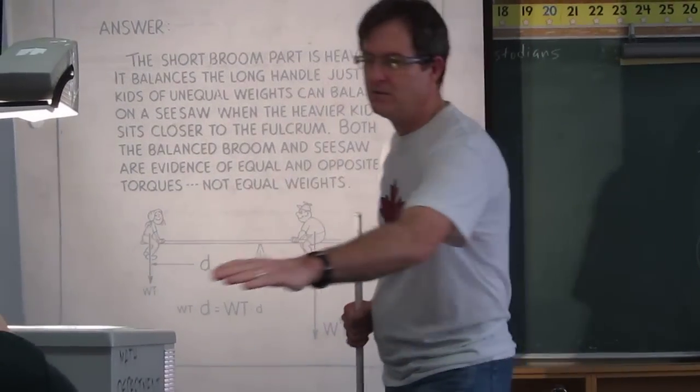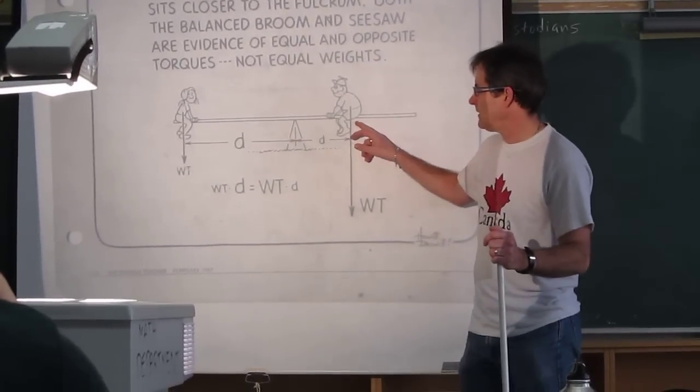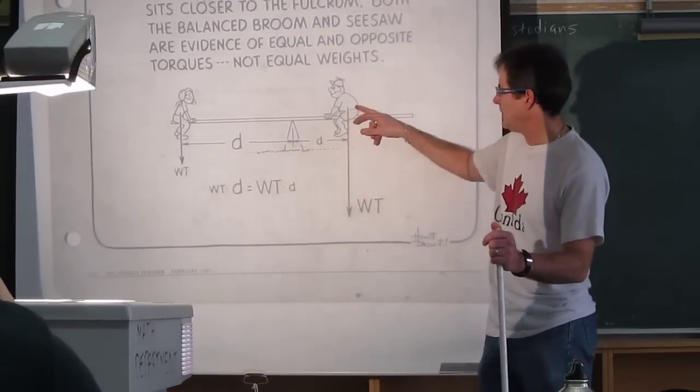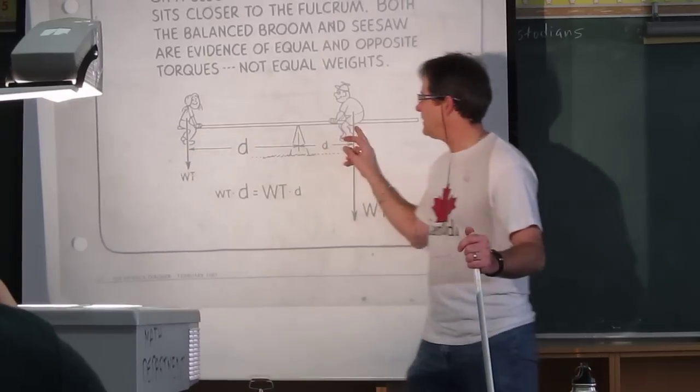In other words, to figure out where this kid needs to sit, the weight of the little person times the distance from the balance point, or the fulcrum, must equal his weight times the distance. Since his weight is greater, he's closer.